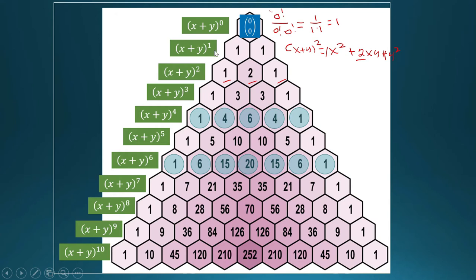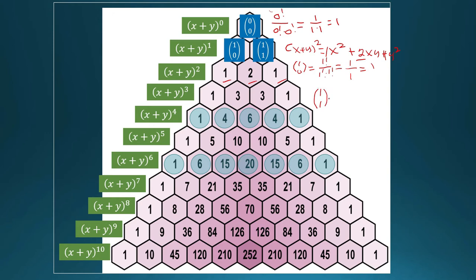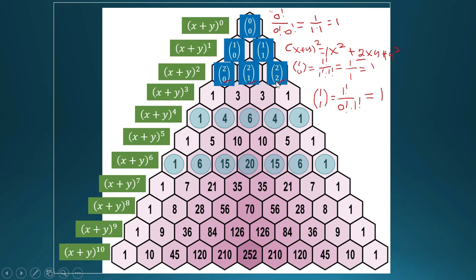(x + y) raised to one: the numerical coefficients of the terms are one taken zero and one taken one. For (x + y) raised to two, the coefficient of the leading term is two taken zero, the next is two taken one, and the last is two taken two.